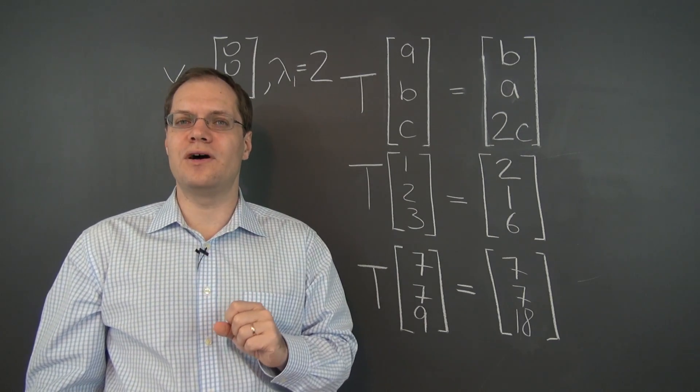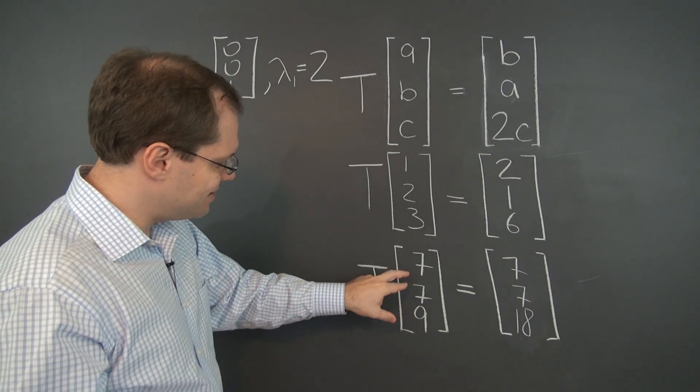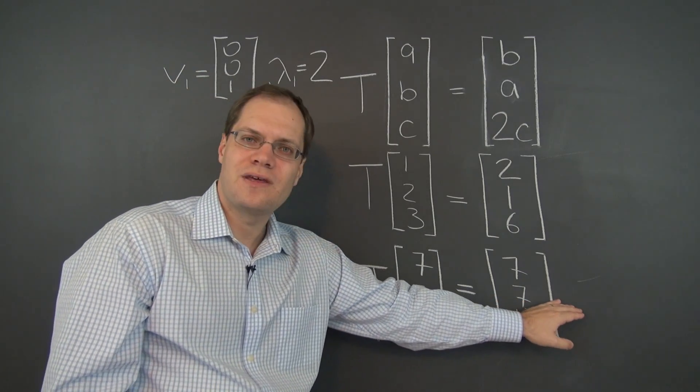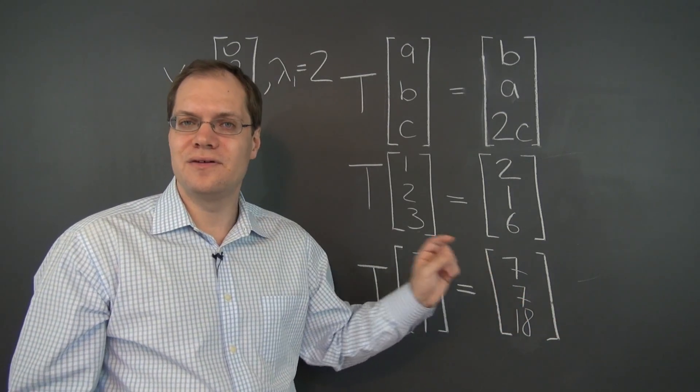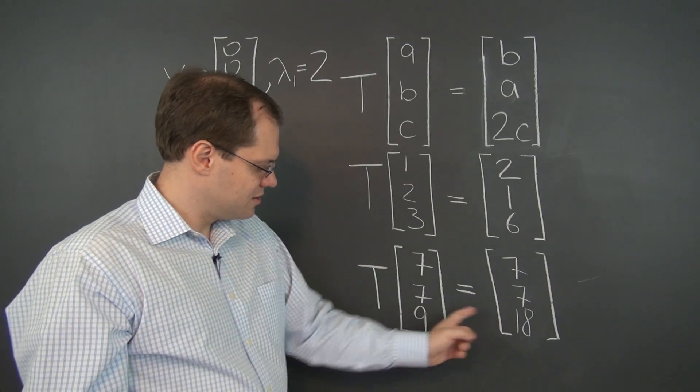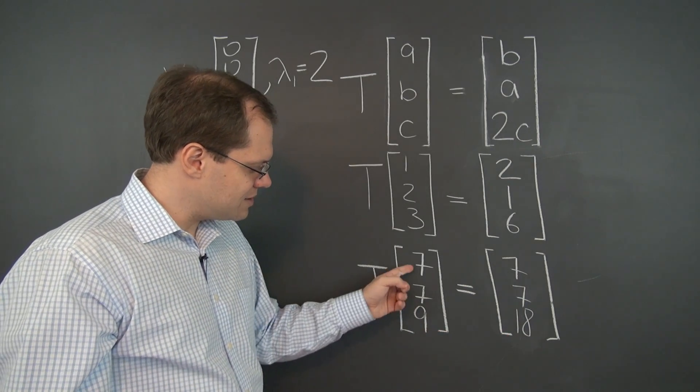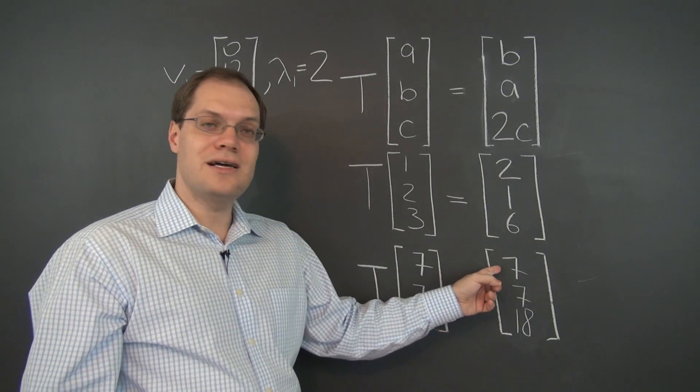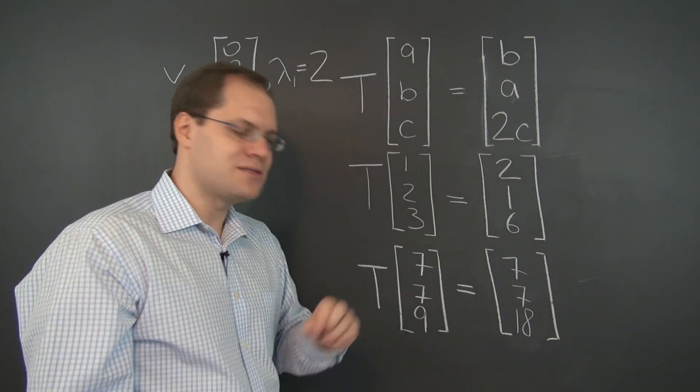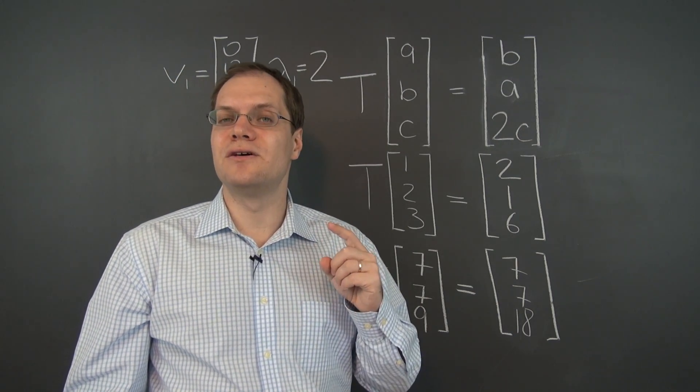So far we have 1. Can we find another? And I think that this one still provides a hint because if we just look at the top part, it looks like it remained itself, suggesting that there is an eigenvalue of 1. But of course, this 9 messed it up. But if we made it 0, then 7, 7, 0 would end up being 7, 7, 0. The output is a multiple of the input and the corresponding eigenvalue is 1.